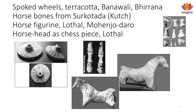We have seen spoked wheels — terracotta spoked wheels found in Banwali and Berdana. The spokes are painted; they could be spindles or representations of spoked wheels. Horse bones have been found from Surkotada in Kutch. We have a horse figurine found in Lothal and Mohenjo-daro, and a horse head as a chess piece found in Lothal. The one-ager also existed in the area, and the Sindh horse was very famous throughout Eurasia.